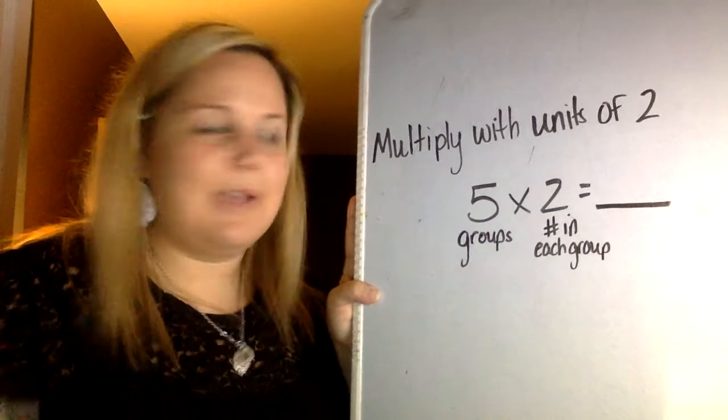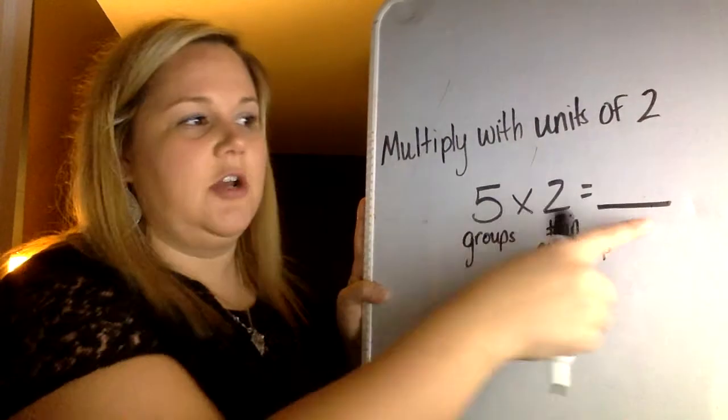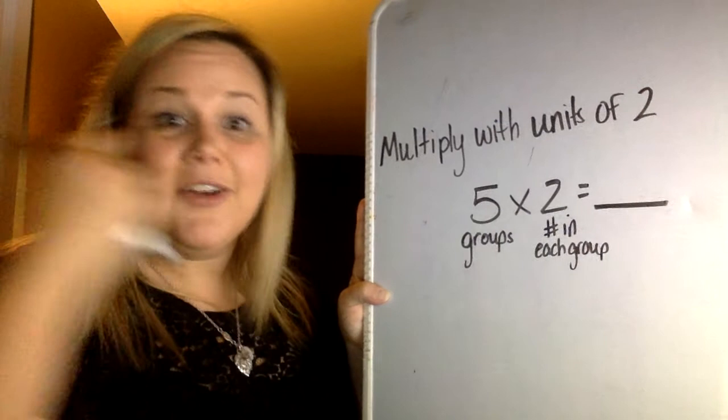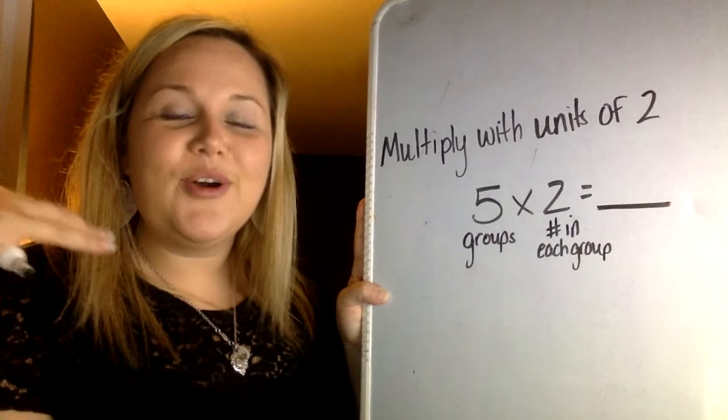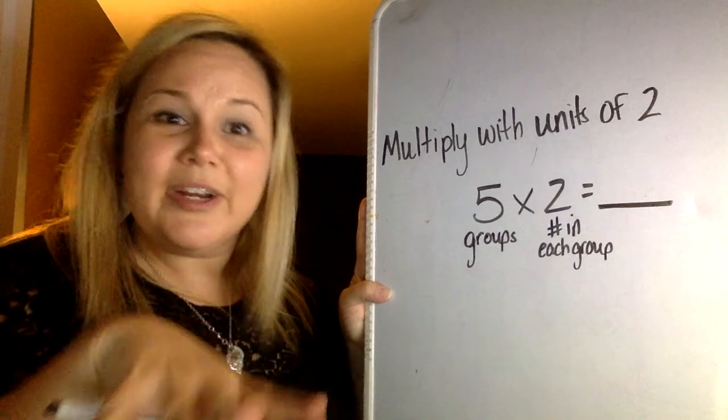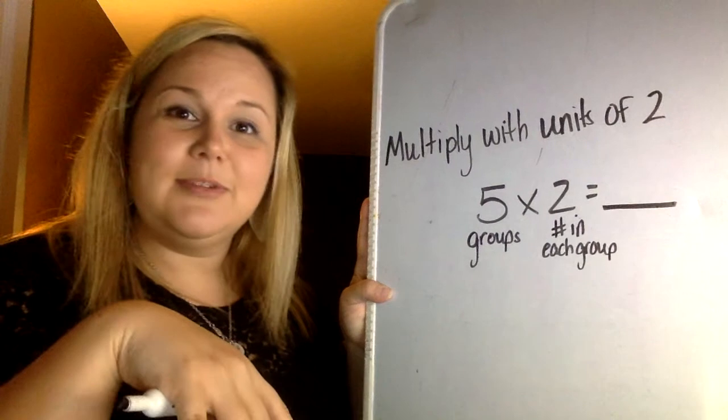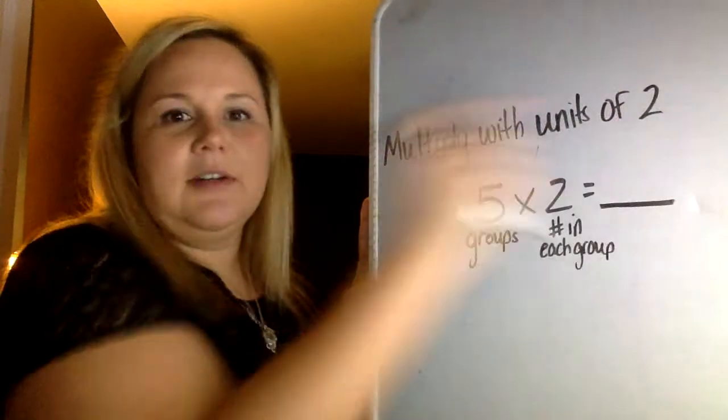So let's take a look at this example. The first one I have is 5 times 2 equals an unknown. That's what that blank means. Remember, an unknown just means we don't know the number that's going to be in that part of our problem yet. But I say yet because we're going to figure it out. I'm going to show you a trick and hopefully it will be something that will help you to be able to multiply with units of 2.